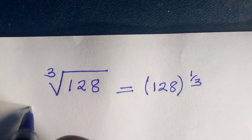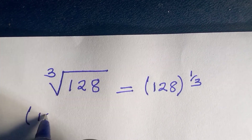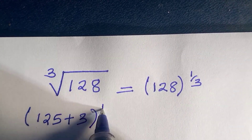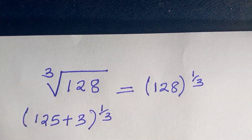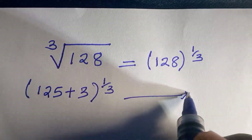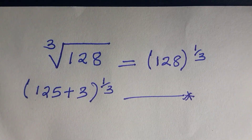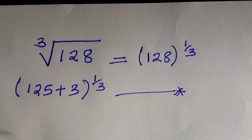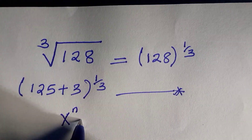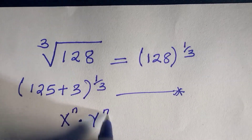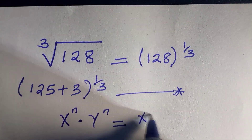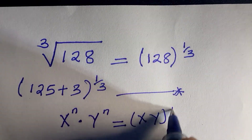We're going to rewrite 128 as 125 plus 3, everything raised to the power of one divided by three. From the law of indices, if you have x to the power of n times y to the power of n, you can combine these with a common power as (xy) raised to the power of n.